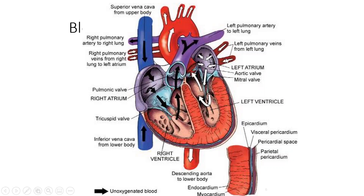Oxygen is attached to the red blood cells and comes back via the pulmonary veins, which carry oxygenated blood. There are four pulmonary veins that dump the blood into the left atrium. That blood then passes through the mitral valve into the left ventricle. The left ventricle pushes it out through the aortic valve through the aorta, supplying the head, neck, upper body, and then the descending aorta feeds the rest of the body.